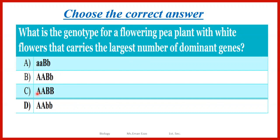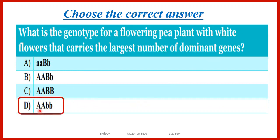This one will also be red because all genes are dominant. Here we have two dominant genes in one pair and no dominant gene in the other pair, so this will also be white. He is asking for the one that carries the largest number of dominant genes. In this case, we choose answer D because it has two dominant genes, while A has only one dominant gene in the second pair.